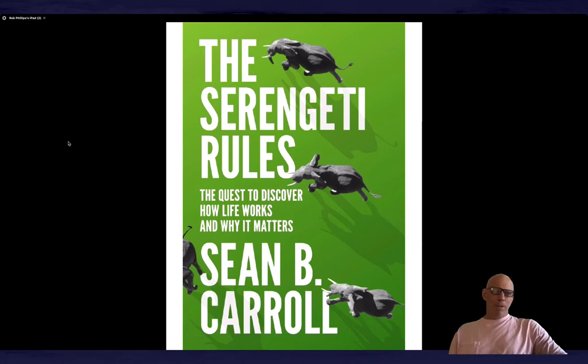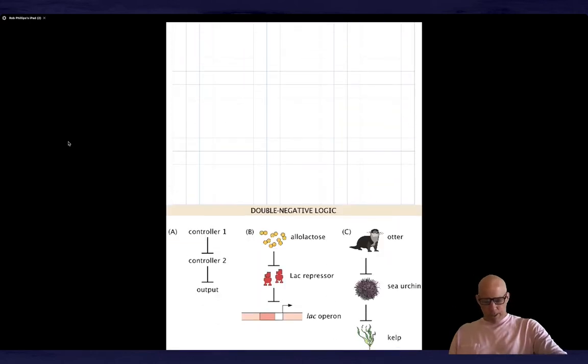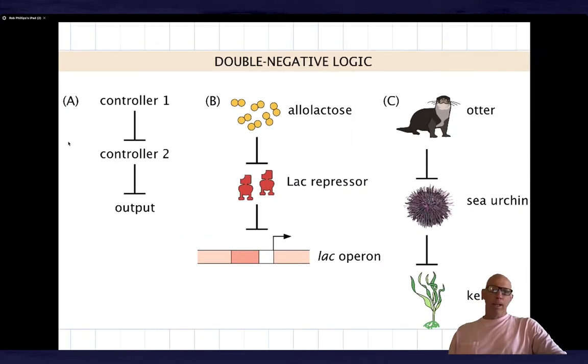What is the double negative logic? On the left is an abstraction that says there's some controller number one, and that controller represses controller number two, and controller number two represses the output. This gives the superficial appearance of being like controller one as an activator. If you didn't know better, you might say I turn on controller one and then somehow output is produced, but in fact it's through the intermediary of the second molecule in the chain.